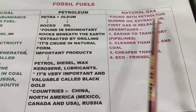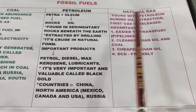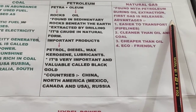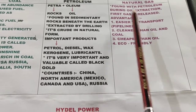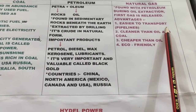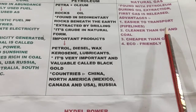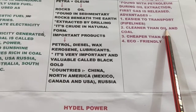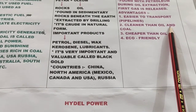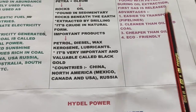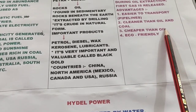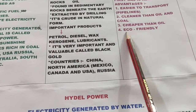Now we will talk about natural gas. It is found with petroleum — when we drill for petroleum, gas is released before petroleum and is collected at the surface. Advantages of natural gas: it is easier to transport via pipeline; it is cleaner than oil and coal with no smoke, making it eco-friendly; and it is cheaper than oil — its rates are very low.